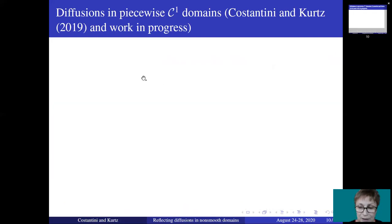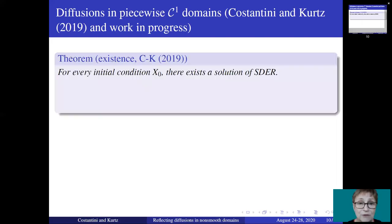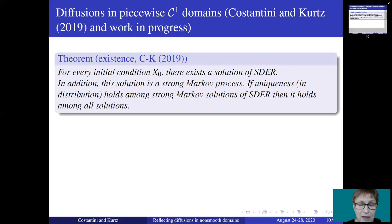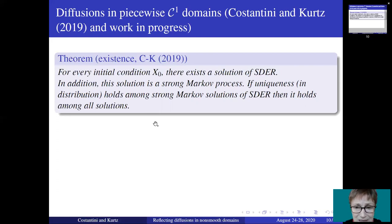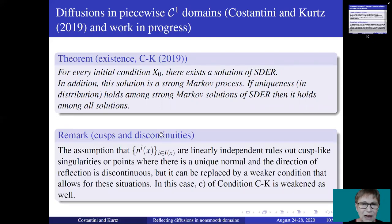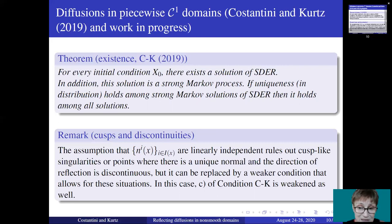Under these conditions we were able to prove, first of all, an existence result. For every initial condition X0, there exists a solution to SDER. Moreover, the solution is a strong Markov process, and if uniqueness holds among strong Markov solutions of SDER, then it holds among all solutions. The second part of the statement is important because the strong Markov property is an essential ingredient in the arguments to prove uniqueness. Let me also remark that the assumption that the normal directions at every point on the boundary are linearly independent rules out cusp-like singularities or points where there is a unique normal and the direction of reflection is discontinuous, but this assumption can be replaced by a weaker condition that allows for these situations.